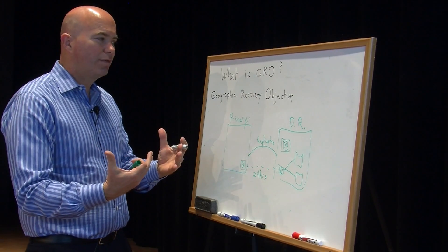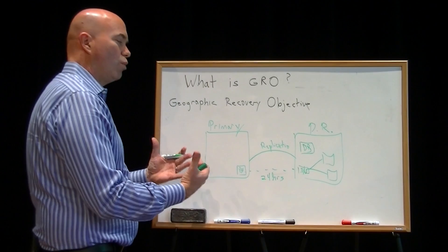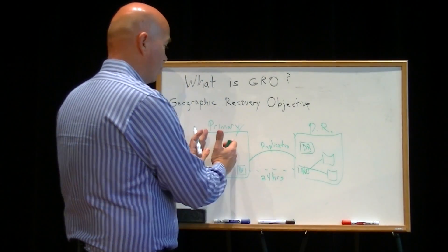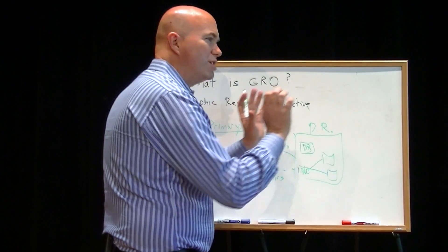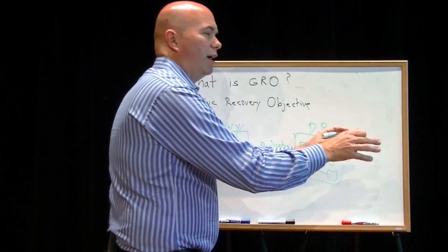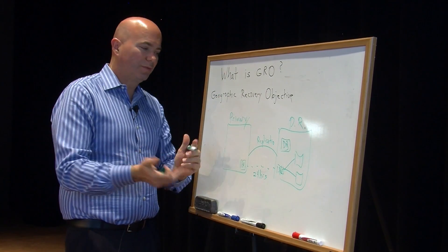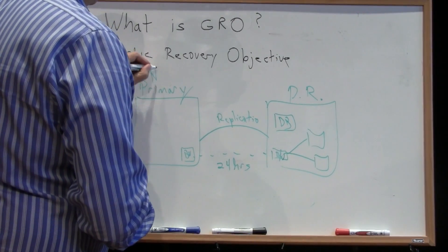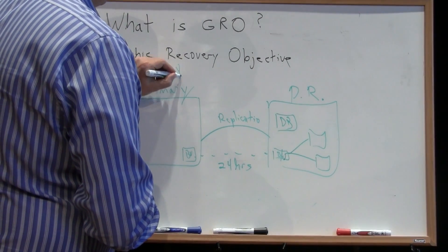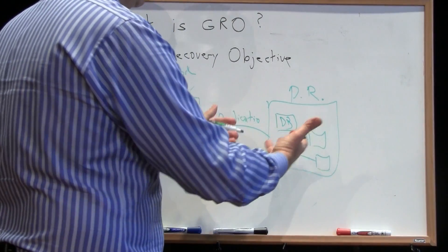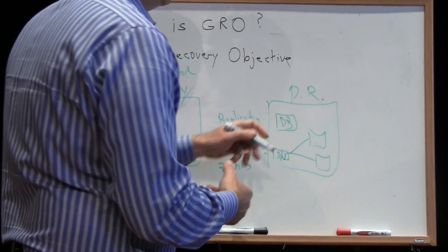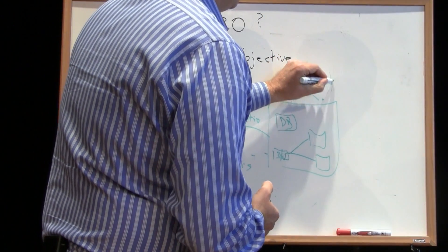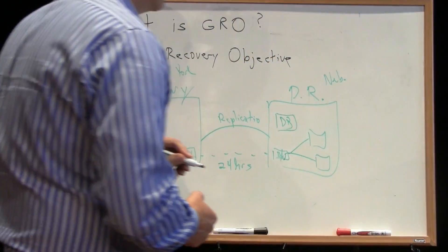But geographic recovery might also have more than one site. Let's say at a minimum, this DR location should be regionally outside of or away from you. So if this is, let's say this is New York, and I would like to be replicating probably at least to about, I would suggest the middle of the country. So maybe Nebraska is a good location.